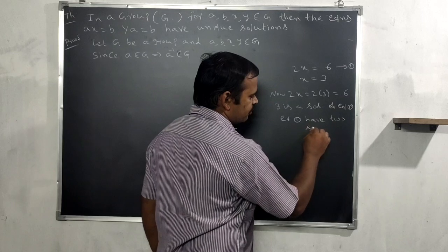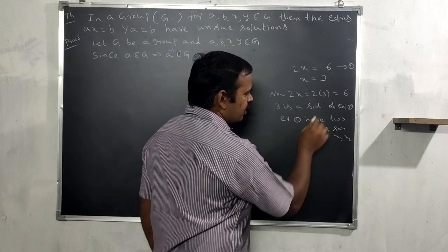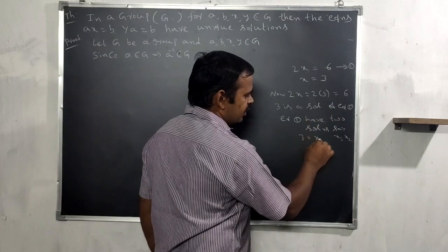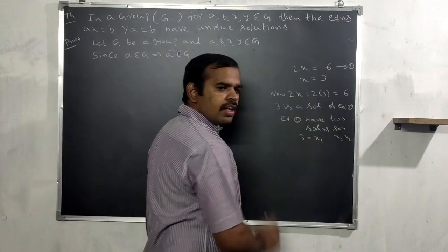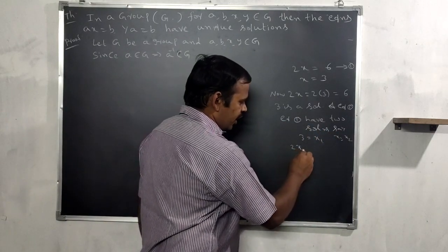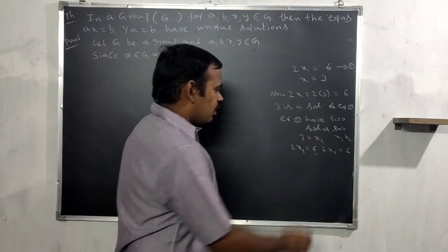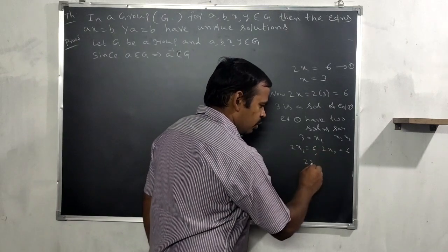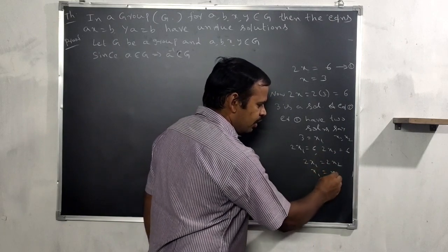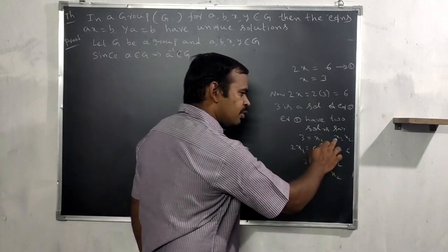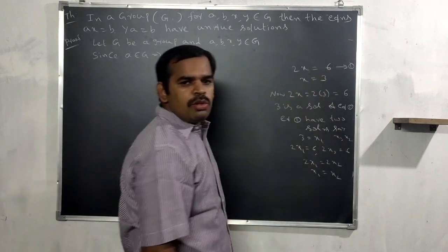Now suppose equation one has two solutions x1 and x2. Then 2x1 = 6 and 2x2 = 6, so 2x1 = 2x2. By left cancellation, x1 = x2. So the two solutions are equal, meaning 2x = 6 has a unique solution.